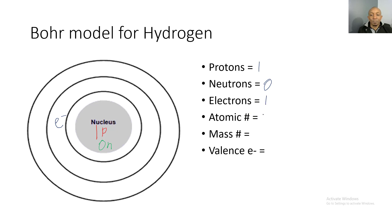Now let's fill out our chart: hydrogen has one proton, zero neutrons, and one electron. The atomic number is the same as the number of protons, which is one. The mass number is protons plus neutrons, so one plus zero equals one. We also have one valence electron. That's how you make the Bohr model for hydrogen.